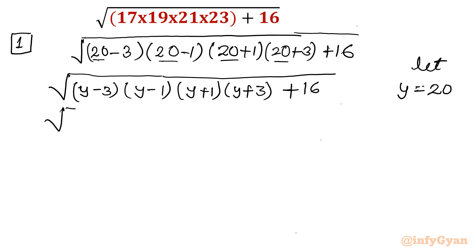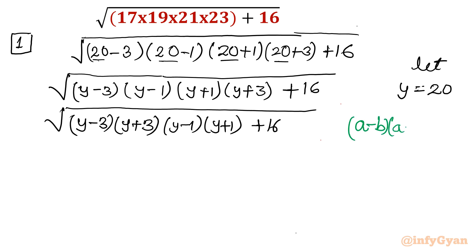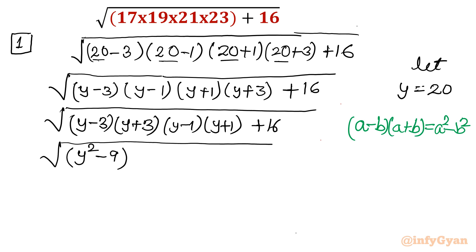Now I will rewrite our expression by grouping: (y minus 3)(y plus 3) and (y minus 1)(y plus 1). We know the algebraic identity: (a minus b)(a plus b) equals a squared minus b squared — the difference of squares form. Applying this, the first pair gives y squared minus 9, and the second pair gives y squared minus 1, plus 16.